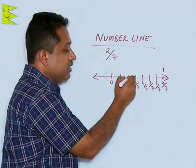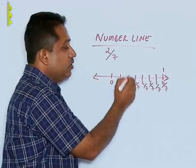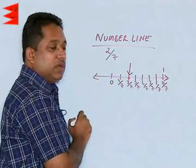2 by 7 is actually this second division after 0. So I can say this value is 2 by 7.